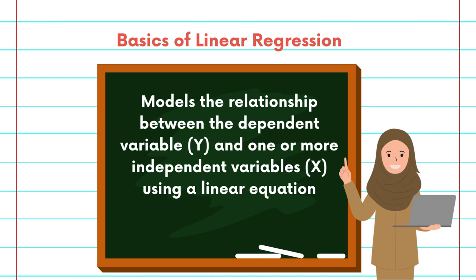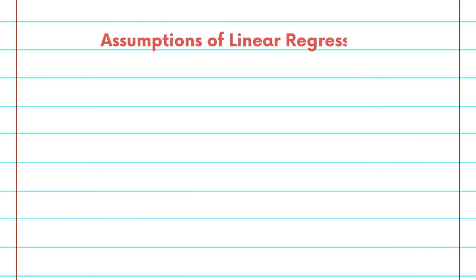Linear regression models the relationship between the dependent variable y and one or more independent variable x, using a linear equation. And it has four main assumptions.